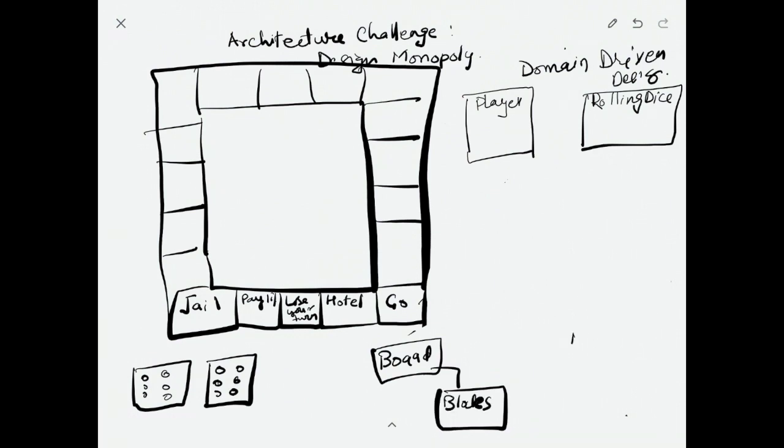We definitely need a board class for the board setup. Board has blocks and blocks could be of different types - it could be hotel, it could be jail, it could be losing a turn. You build some enumeration for the blocks and write a switch statement and do some processing and coding.